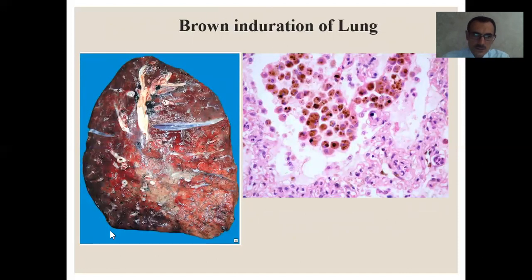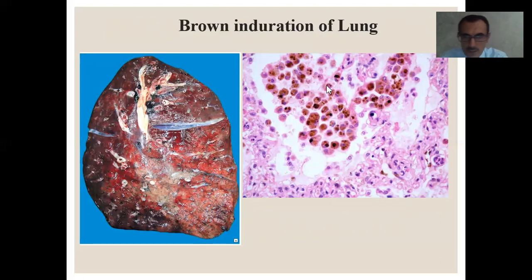In these illustrations, you see the gross picture of the brown induration of the lung. And microscopically, in the biopsy taken from the lungs, we find abundant brown cells — these are the siderophages, macrophages that have engulfed hemosiderin.